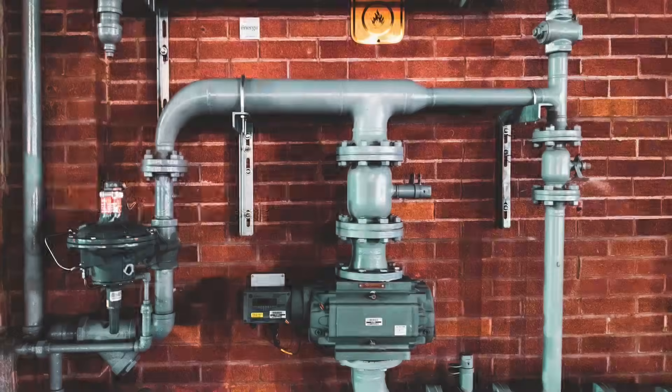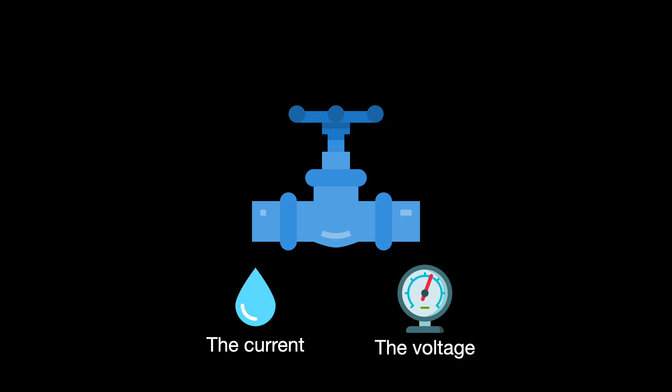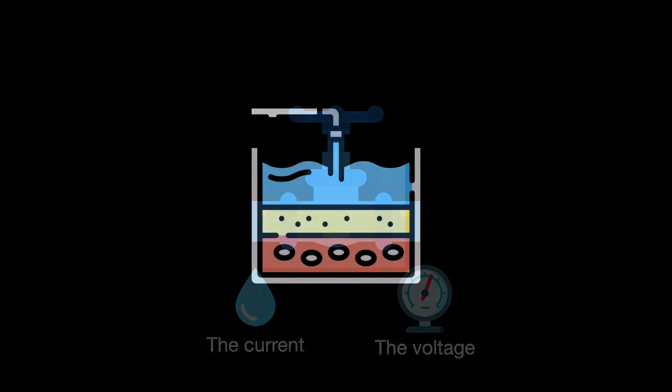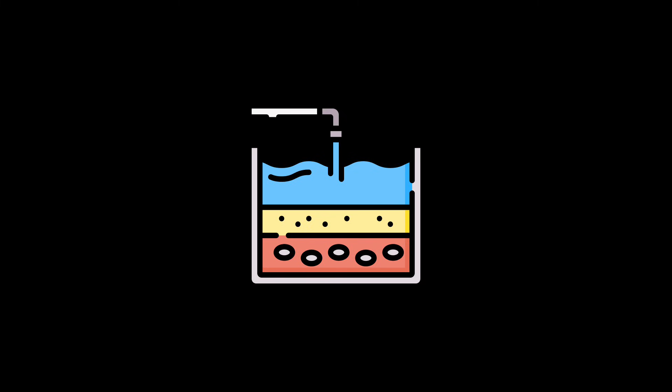Electrical engineers like to use water metaphors to describe their work. Imagine a pipe with a flow of river water passing through it. The flow of water is the current. The voltage is the pressure compelling the water to flow. The pipe facilitates the flow of water, kind of like how a conductor conducts a current through it.